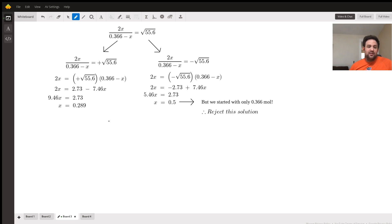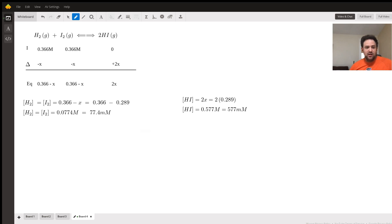We go with the positive situation where x is equal to 0.289. Then we return back to our equilibrium expression and we can see how we can apply that. We know that x is equal to both H₂ and I₂ in the change department, so all we do is say the equilibrium for both H₂ and I₂ is 0.366 minus x. We carry out both of these operations at once, subtract x, and find that the concentration of H₂ and I₂ at equilibrium is the same, which is 77.4 millimolar.